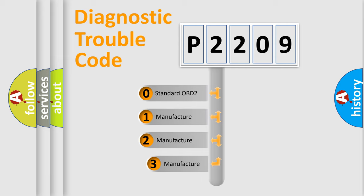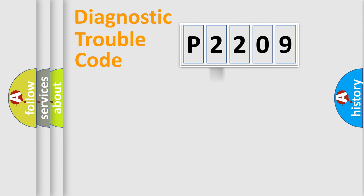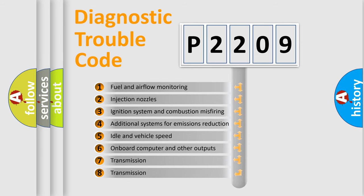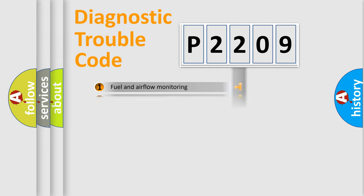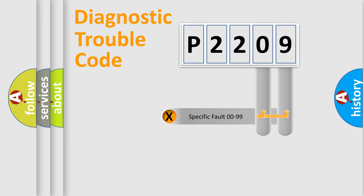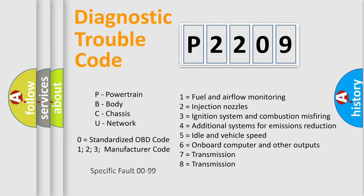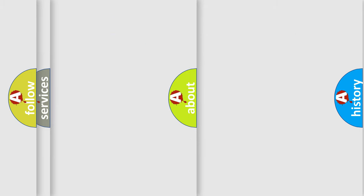If the second character is expressed as zero, it is a standardized error. In the case of numbers 1, 2, or 3, it is a more manufacturer-specific expression of a car-specific error. The third character specifies a subset of errors. This distribution is valid only for the standardized DTC code. Only the last two characters define the specific fault of the group, and such a division is valid only if the second character code is expressed by the number zero.